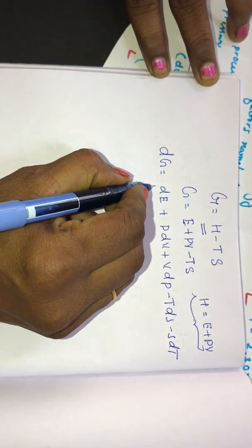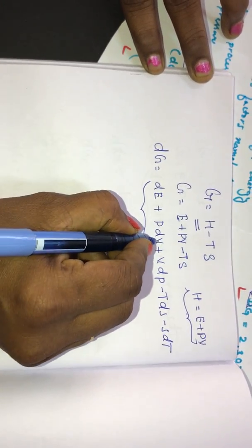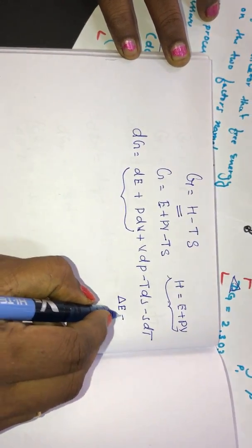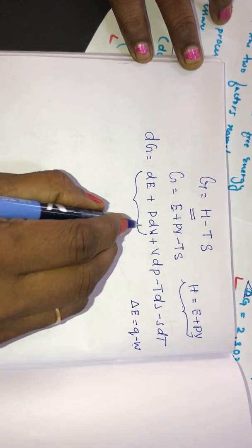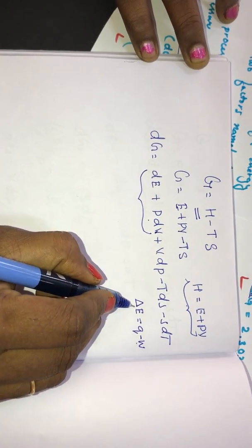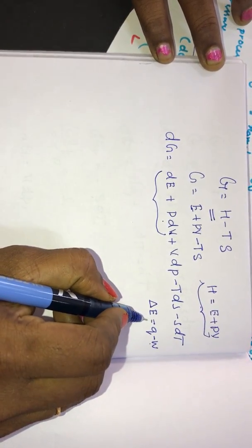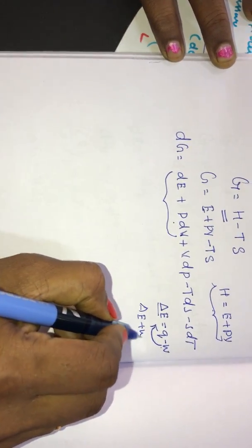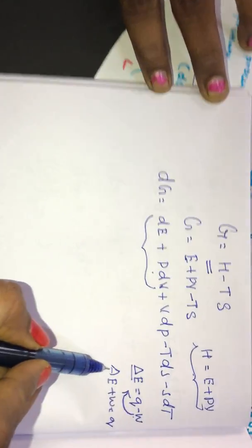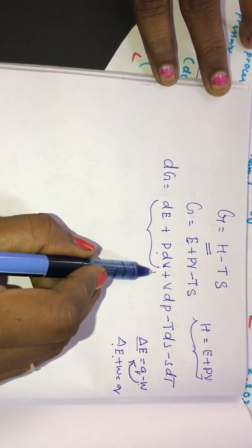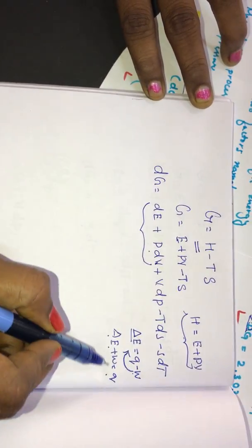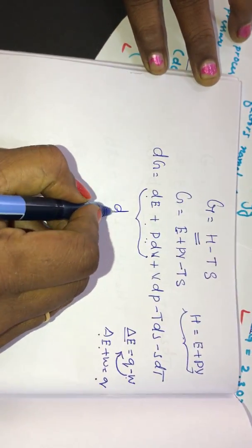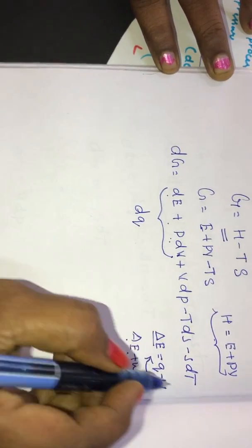Now, what is dE plus P dV? This is nothing but the first law of thermodynamics. The first law states delta E is equal to Q minus W, where W is P dV. So delta E plus W gives Q, meaning dE plus P dV is equal to dQ from the first law of thermodynamics. Therefore, in place of dE plus P dV we can substitute dQ.